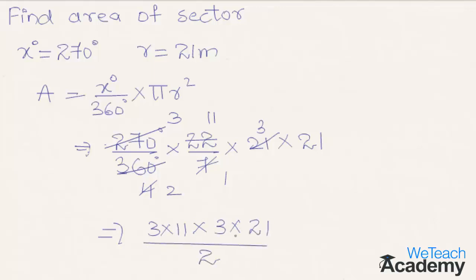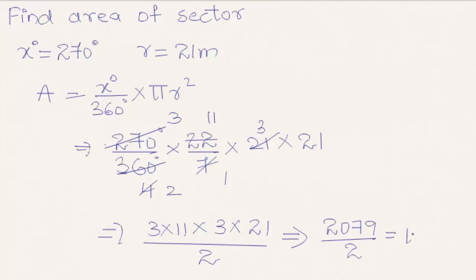By multiplying all the terms in the numerator we get the product as 2079 divided by 2. And by dividing both terms we get the result as 1039.5 square meters as the area of the sector.